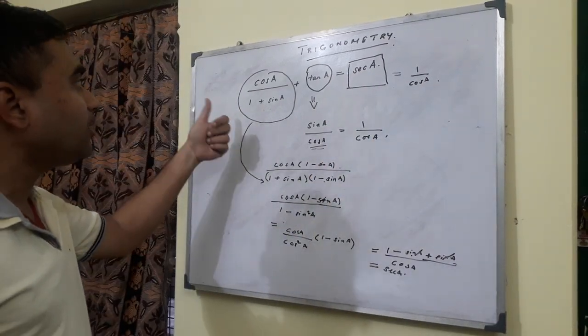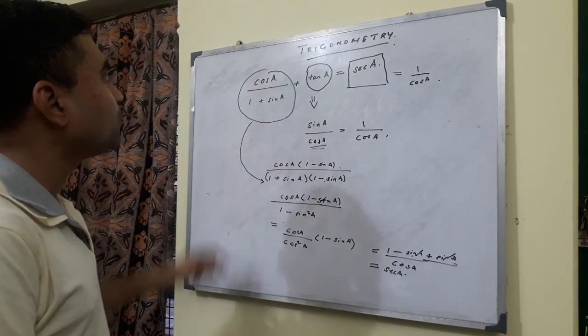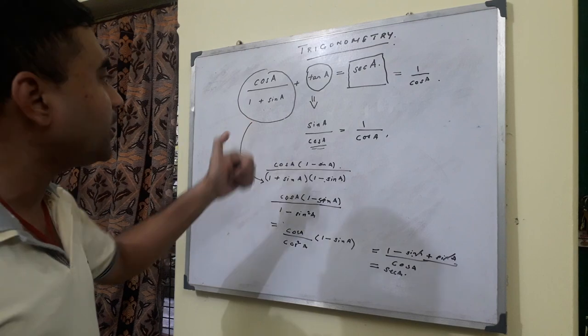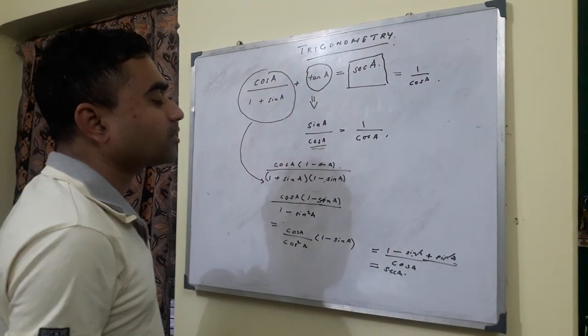Now in order to get 1 by cos A in the left hand side, what do we have to do? The first term does not have cos A in the denominator. I have to create cos A in the denominator. tan A can be written as sin A by cos A.